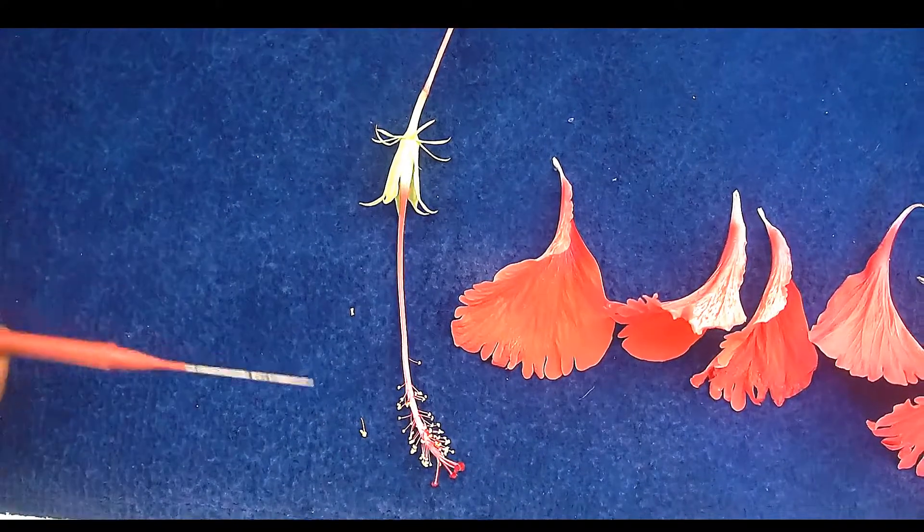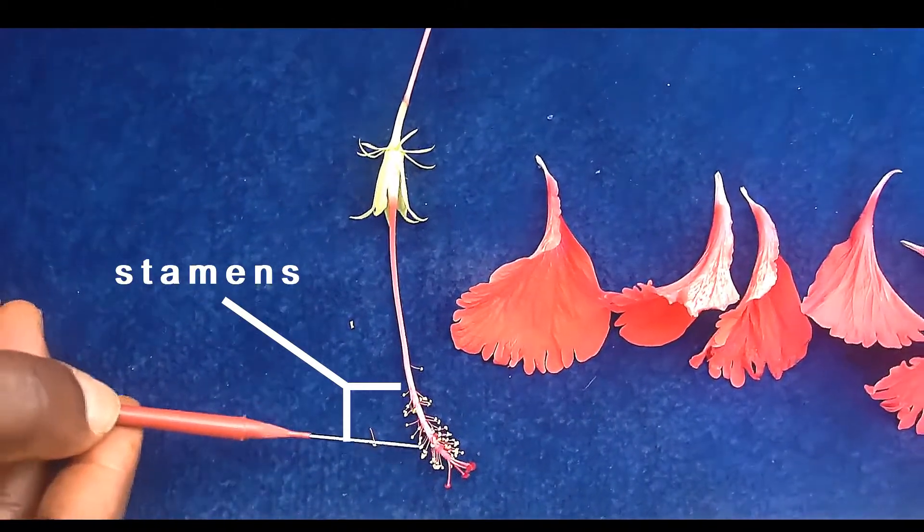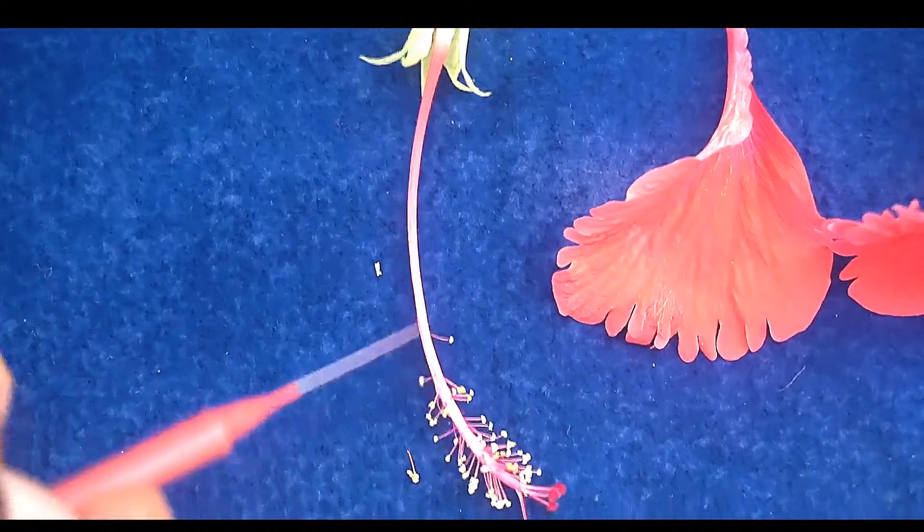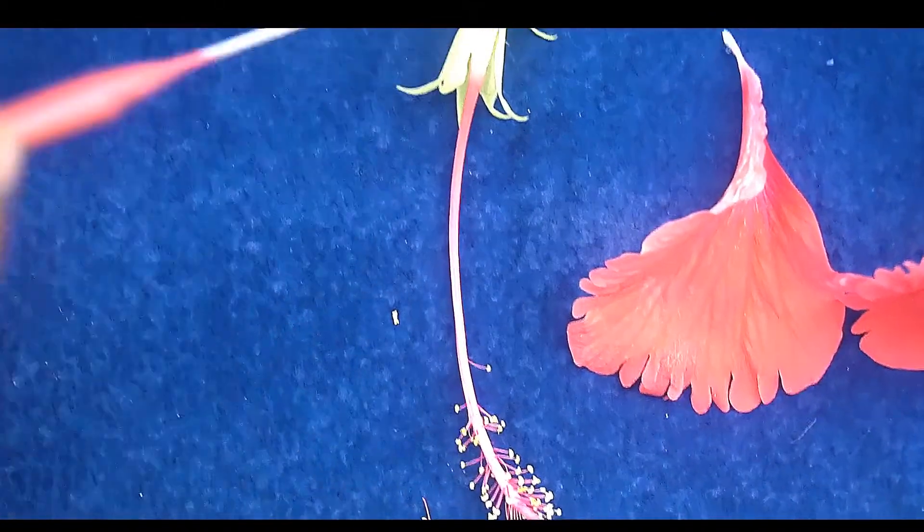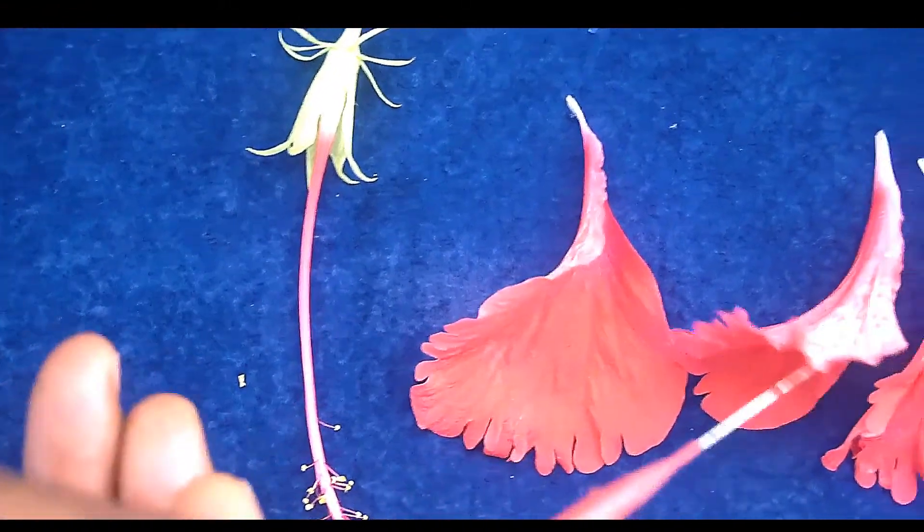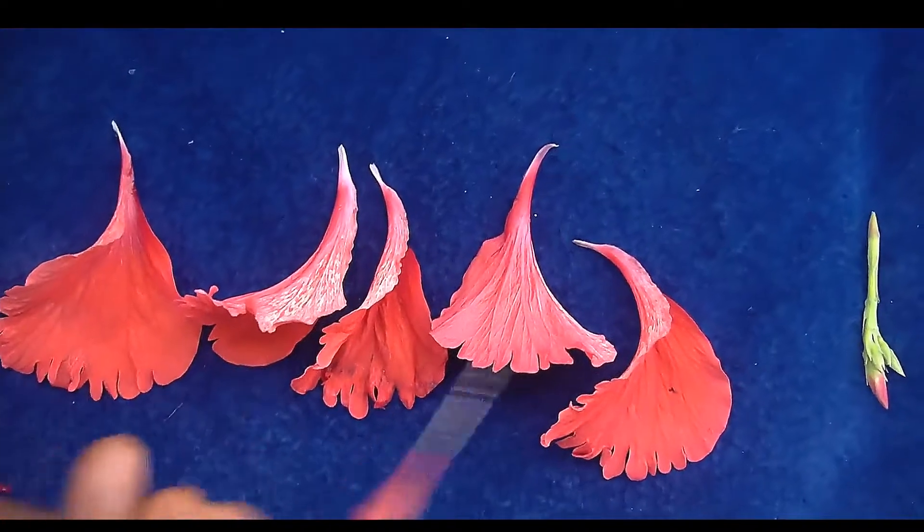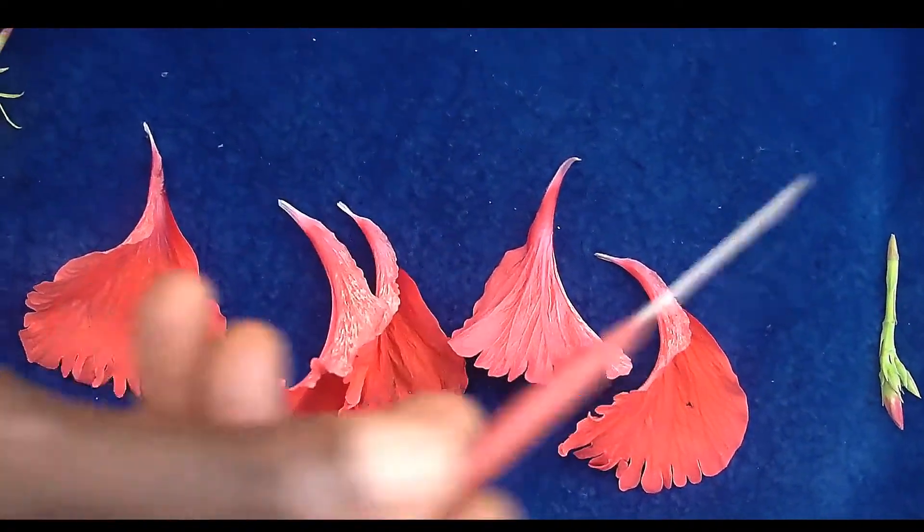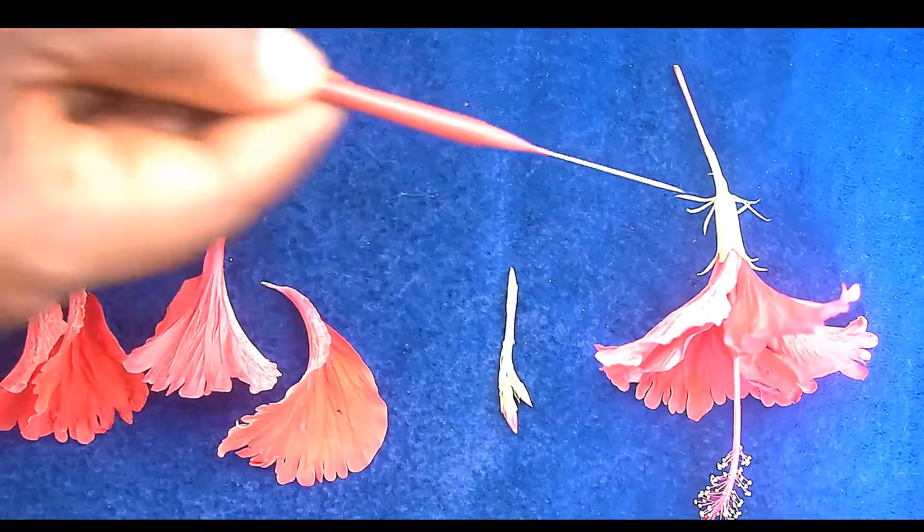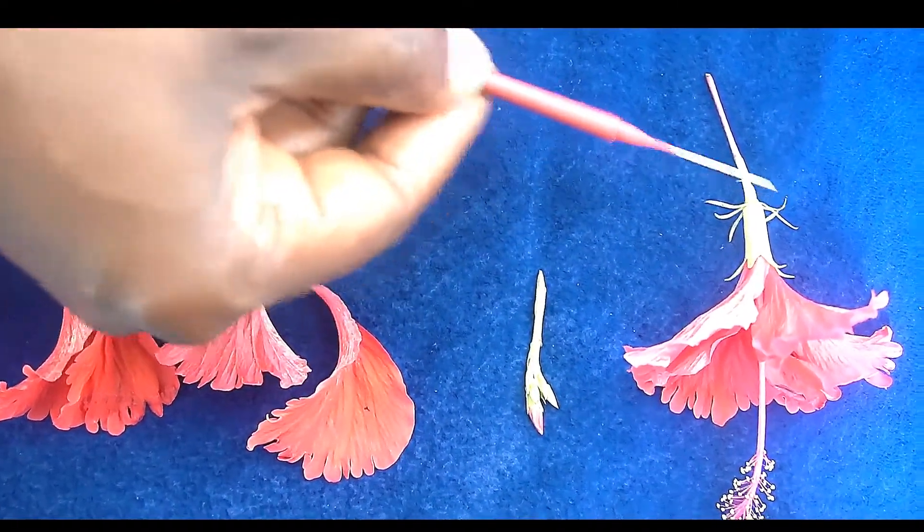Now, once again, we have the stamen. We call the stamen. We call that the pistil. And then, these are the petals. All the petals together, we call corolla. And then the calyx, each of them, is called the sepal.